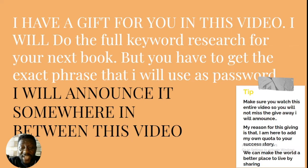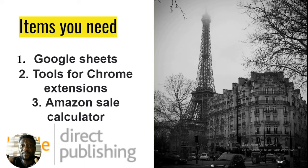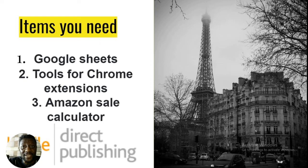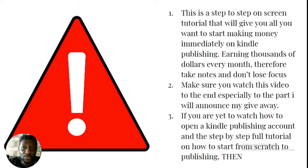My reason for doing this is I want to add my own quota to your success story — we can make the world a better place by sharing knowledge. Now, there are three items you need: number one, a Google Sheet to tabulate your research; number two, some Chrome extension tools that I will tell you about; and number three, the Amazon Sales Calculator, which I will also show you how to get and use.